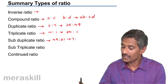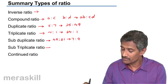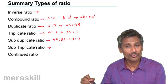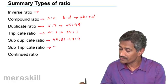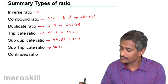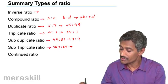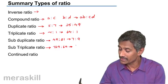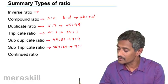Sub triplicate ratio is cube root ratio. So suppose you have 729 is to 64, then the sub triplicate ratio is cube root of 729, that is 9, is to cube root of 64, that is 4.